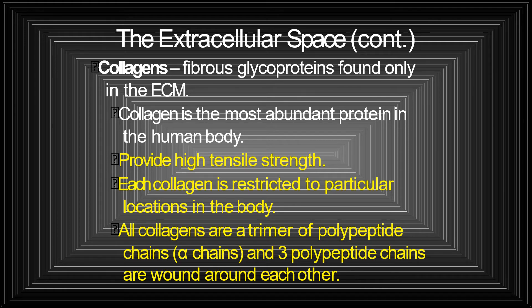The extracellular space consists of collagens, which are fibrous glycoproteins found only in the extracellular space. Collagen is the most abundant protein in the human body and provides high tensile strength. Each collagen is restricted to particular locations in the body, and all collagens are a trimer of polypeptide chains — alpha chains — with three polypeptide chains wound around each other.